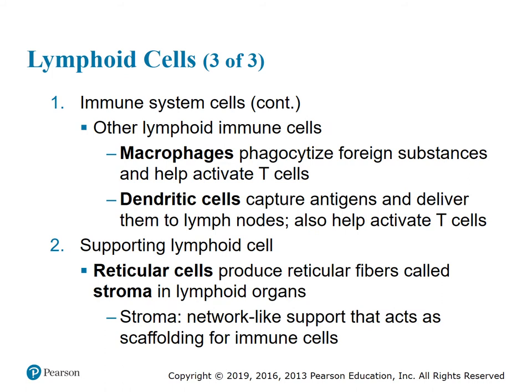Other lymphoid immune cells include macrophages — as the name suggests, 'macro' means big, 'phages' means eaters — which phagocytize foreign substances and help activate T cells. There are also dendritic cells, which capture antigens and deliver them to lymph nodes, and also play a role in activating T cells. The other component of lymphoid cells are supporting cells, such as reticular cells, which produce reticular fibers called stroma in lymphoid organs. The stroma is a network-like support that acts as scaffolding for immune cells.